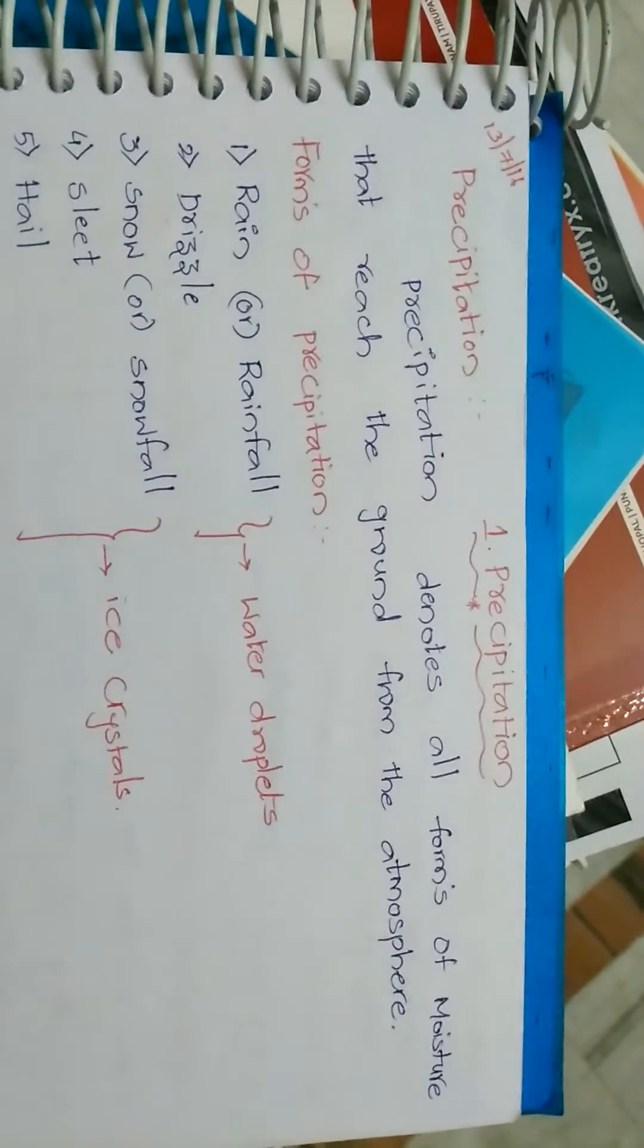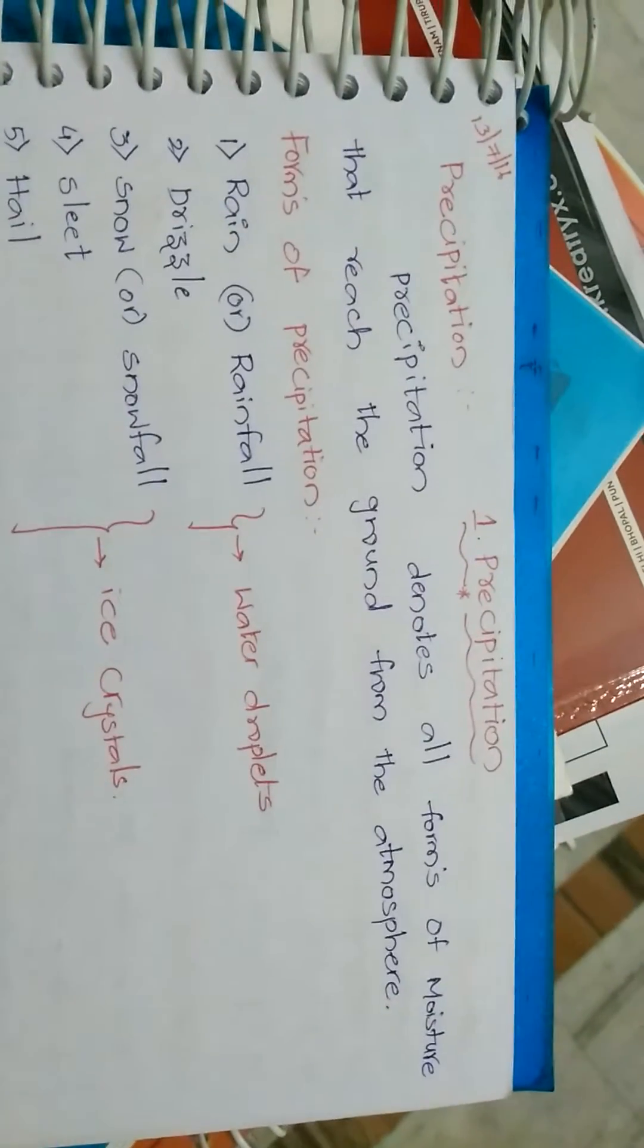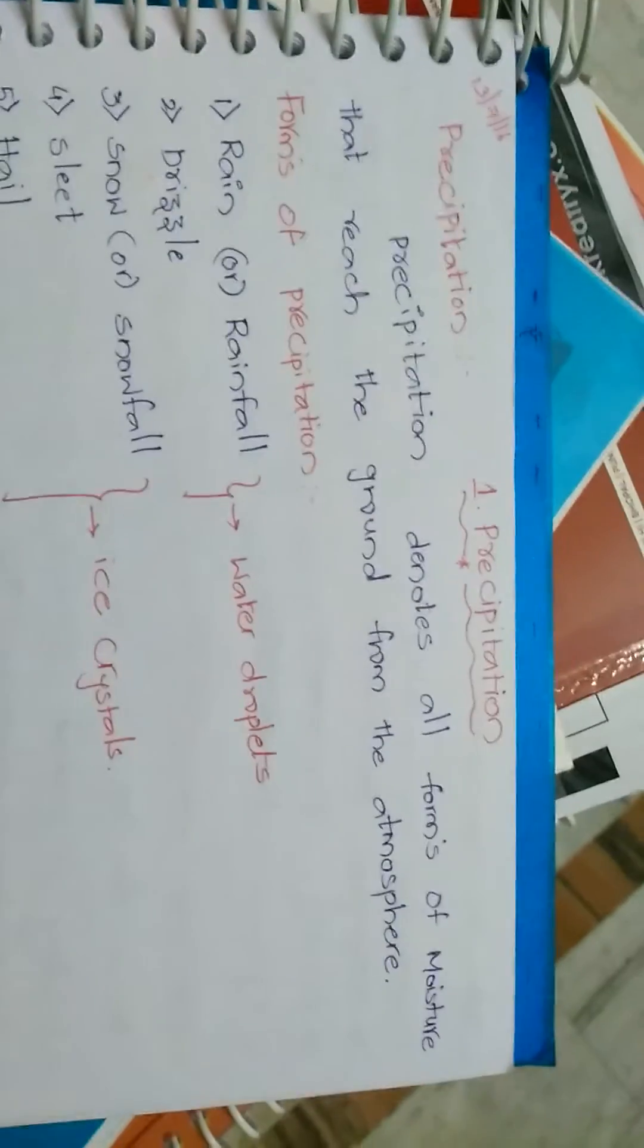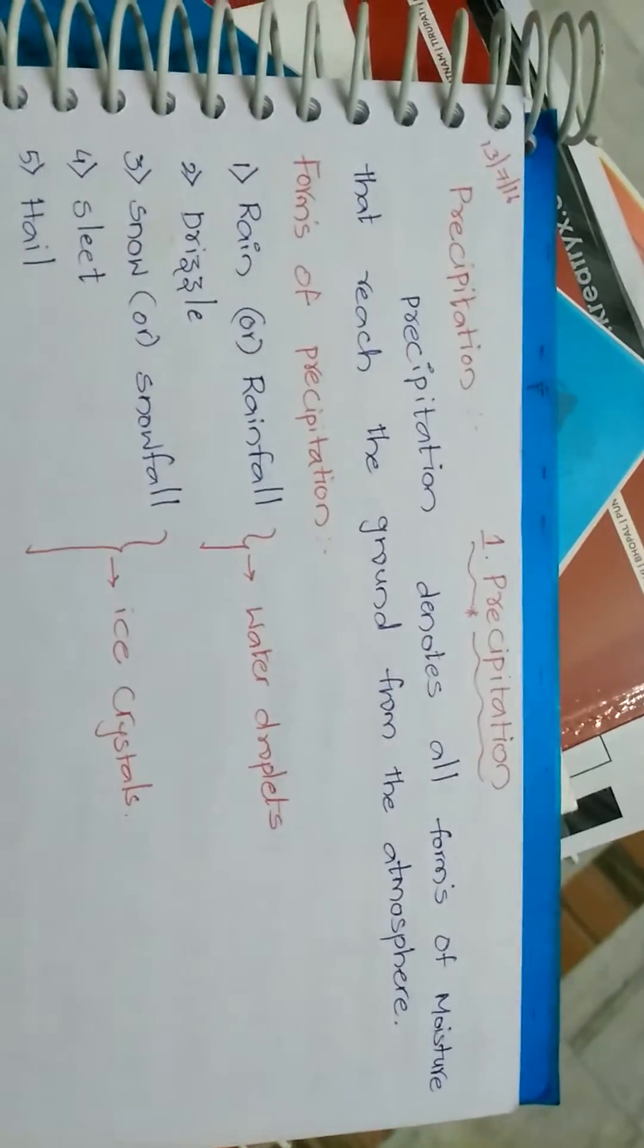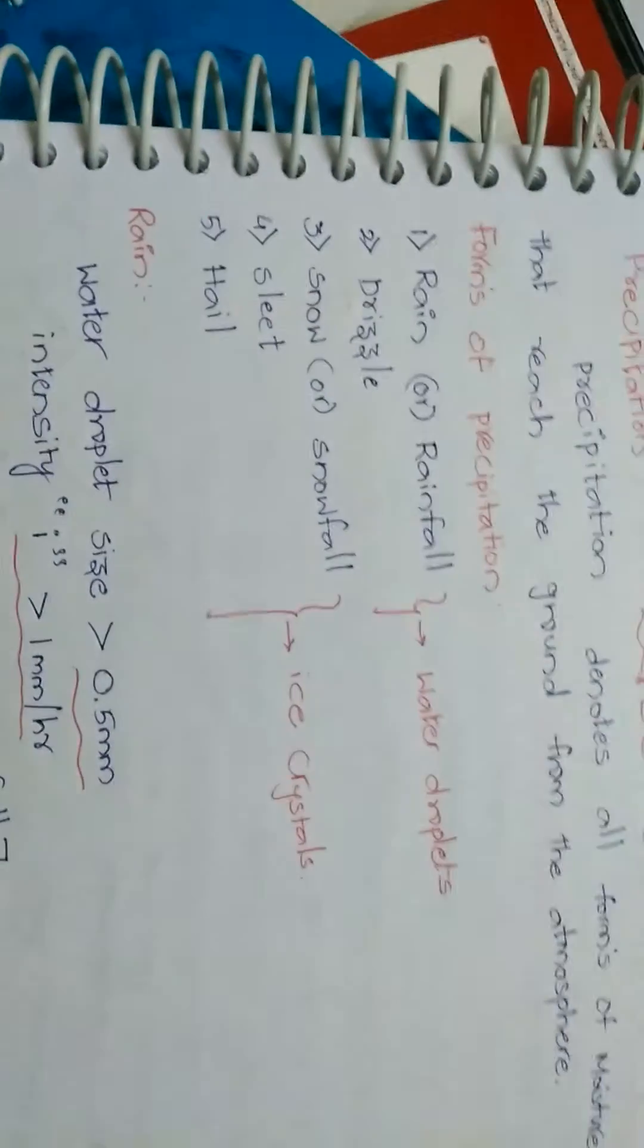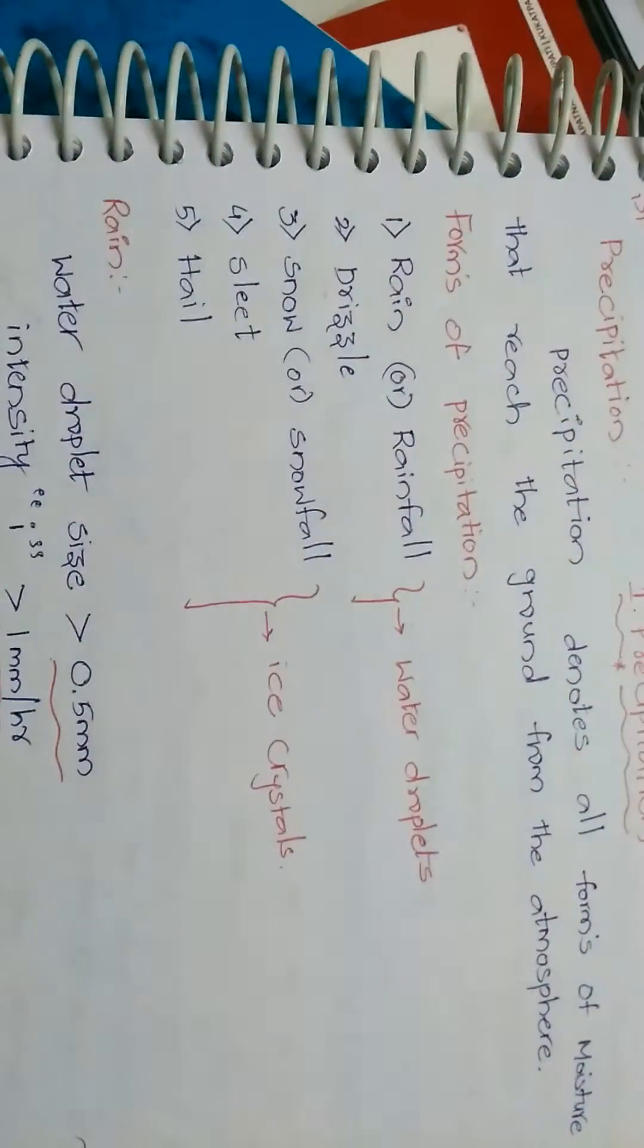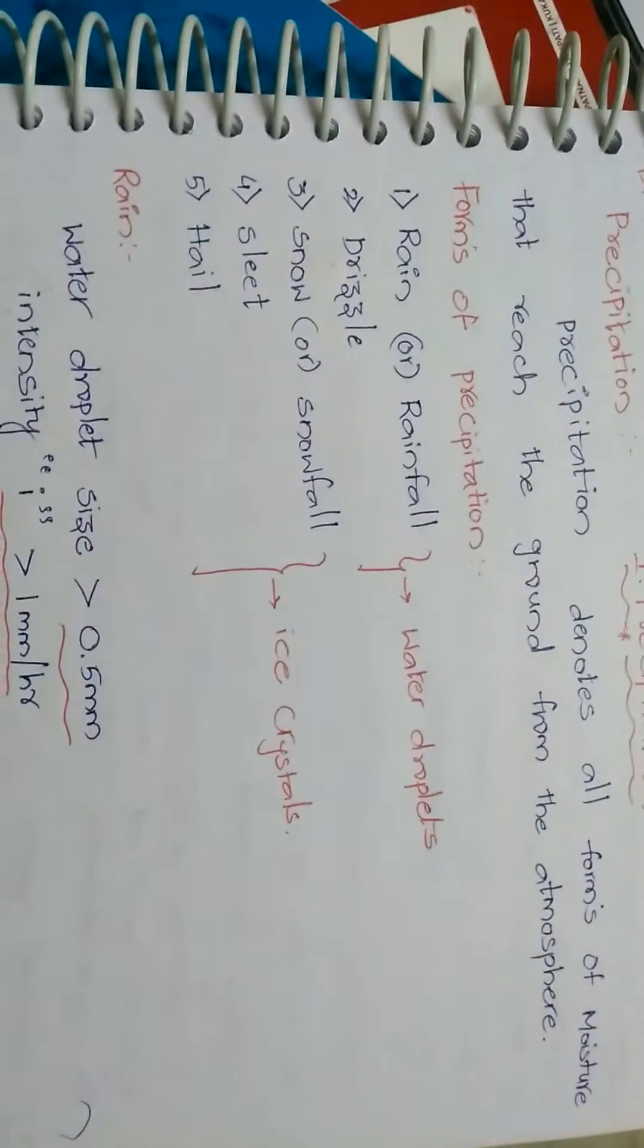Today we are going to know about what is precipitation and what are the forms of precipitation and types of precipitation. Precipitation denotes all forms of moisture that reaches the ground from atmosphere. Forms of precipitation, precipitation has different forms.